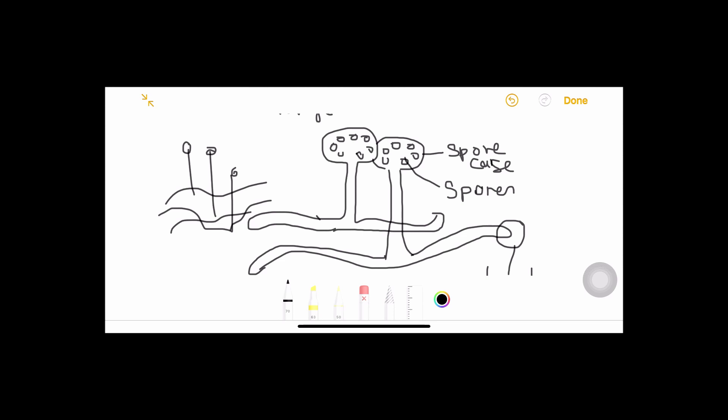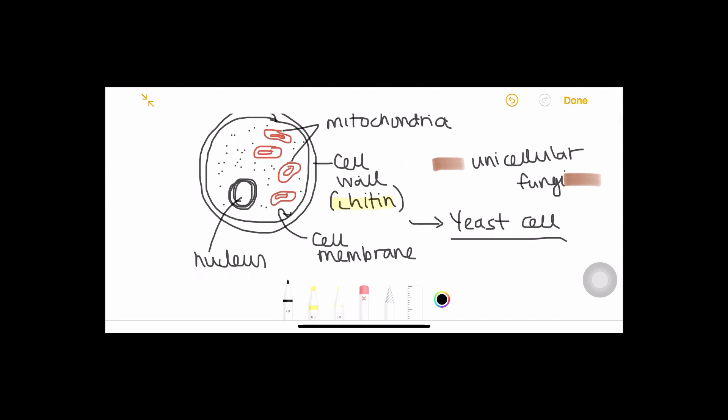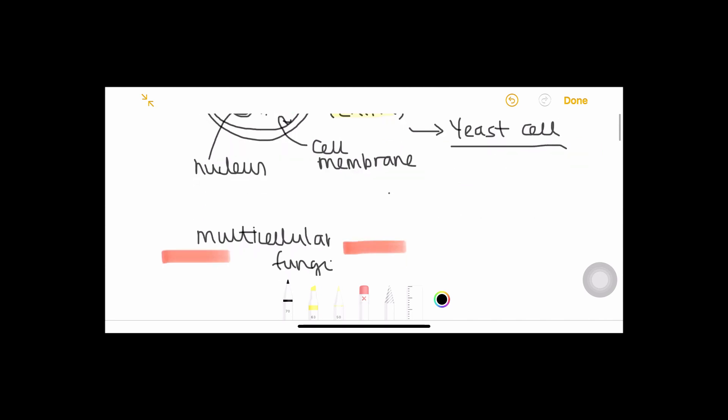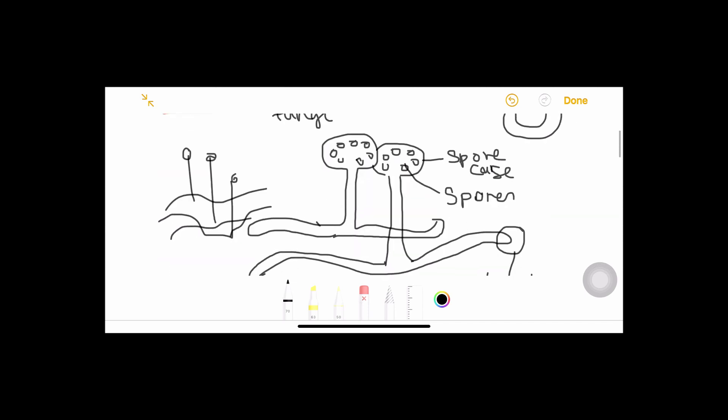The spores can just expose themselves around, they just can go along with the wind. Whereas when it comes to the unicellular fungi, yeast cells usually reproduce by a process known as budding. So how they carry out budding is that one cell gives rise to another and then they break into two different cells.